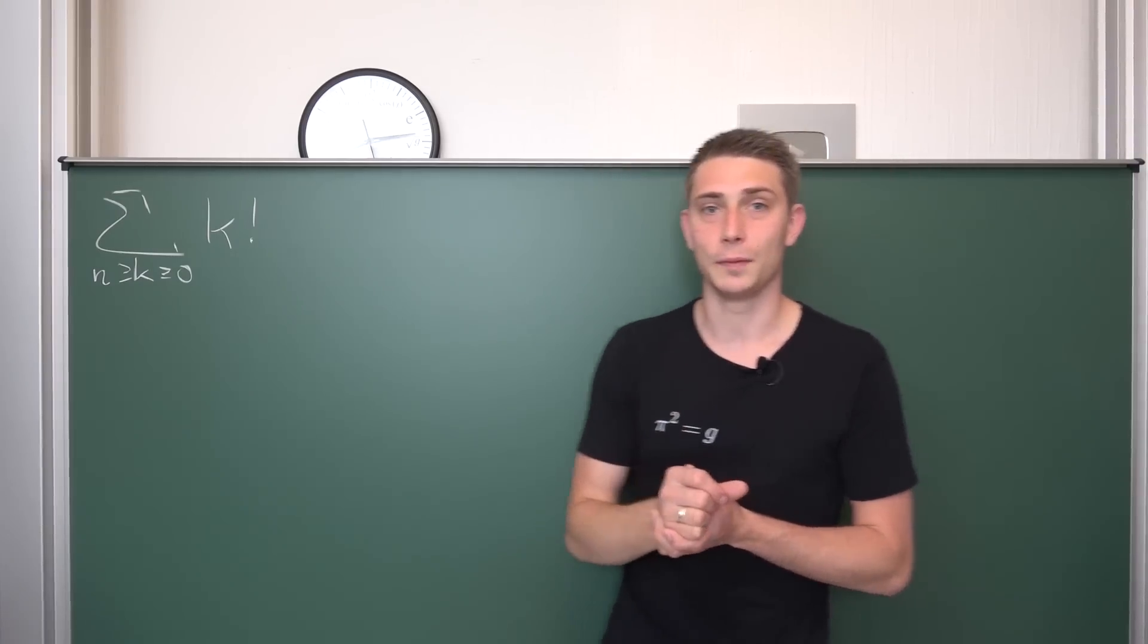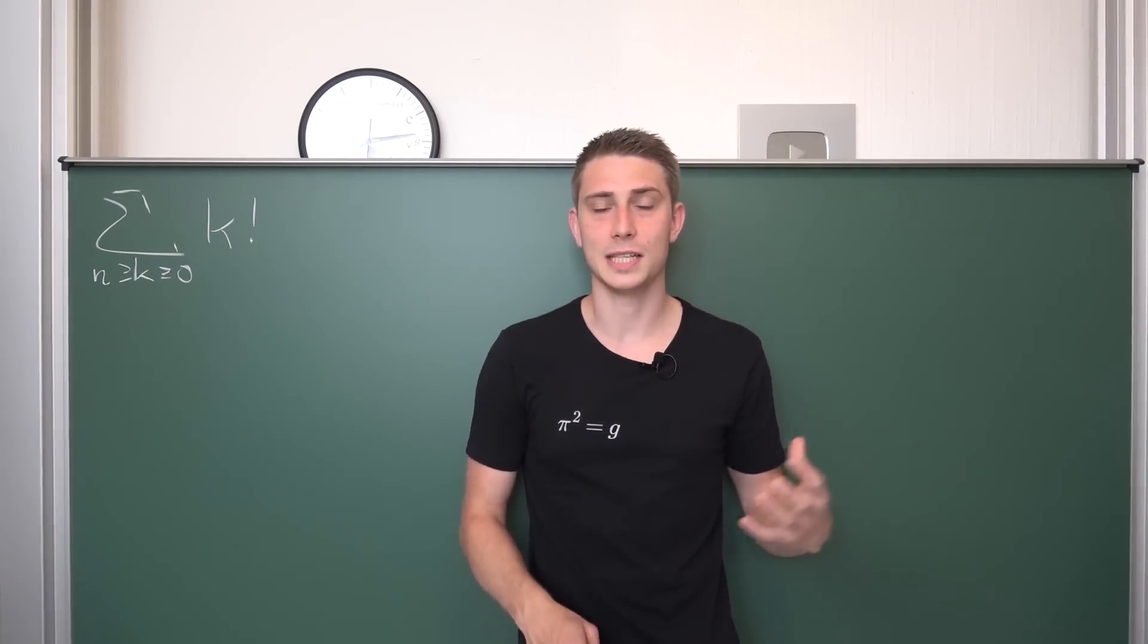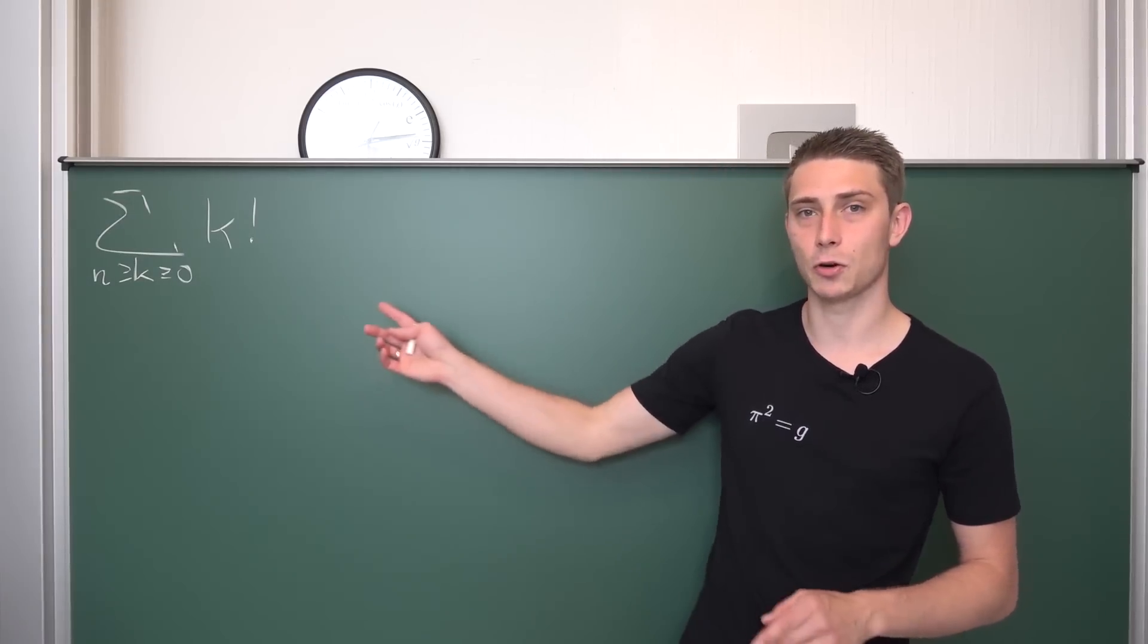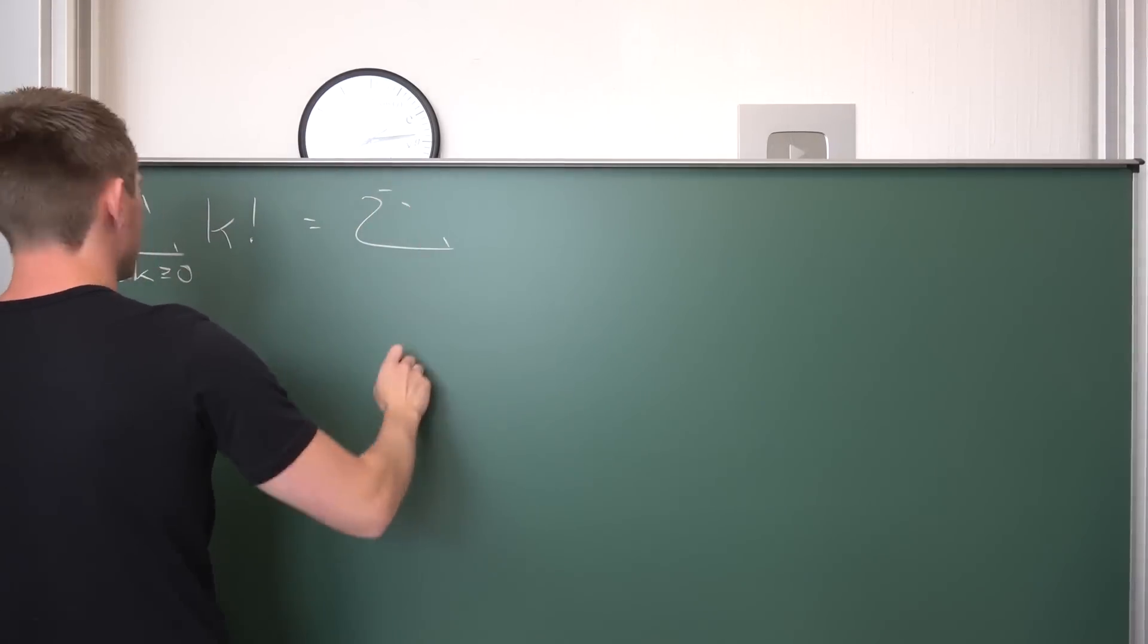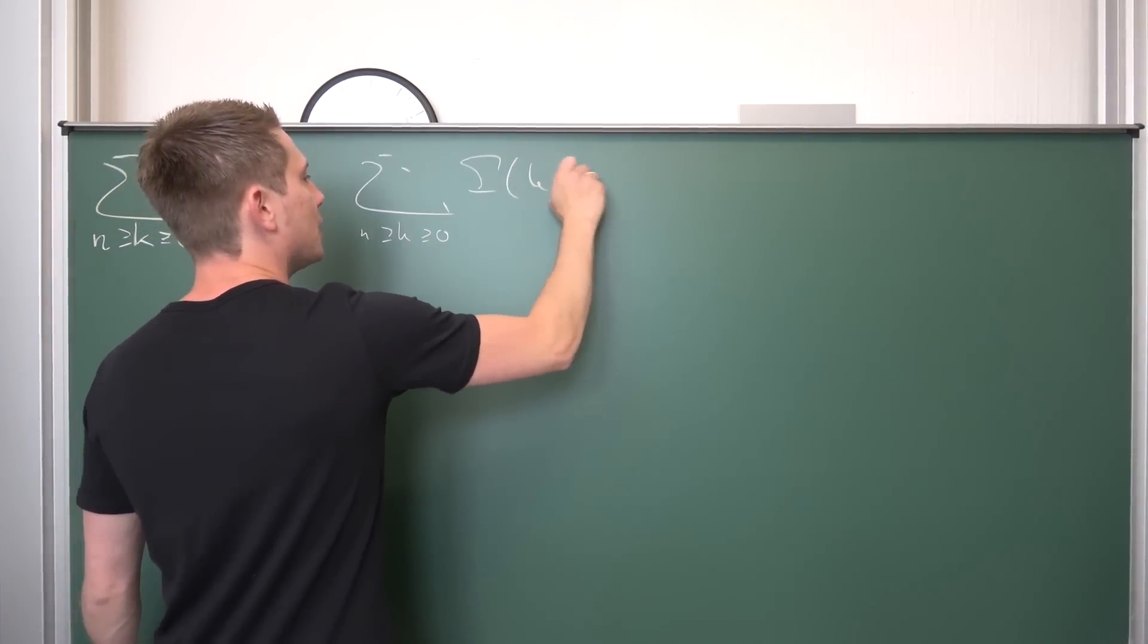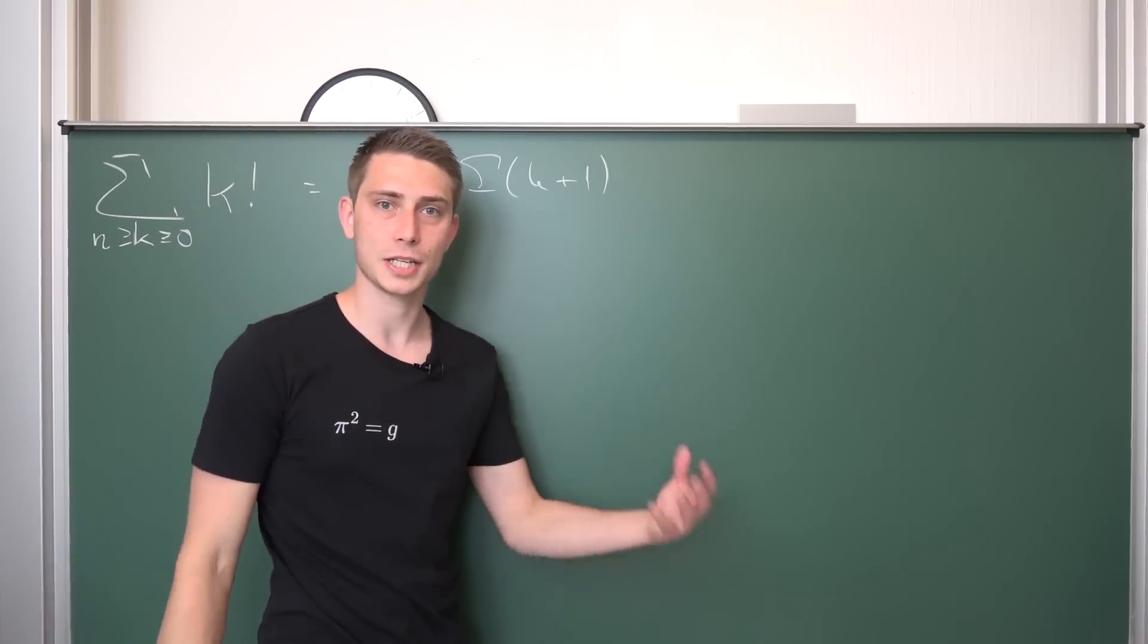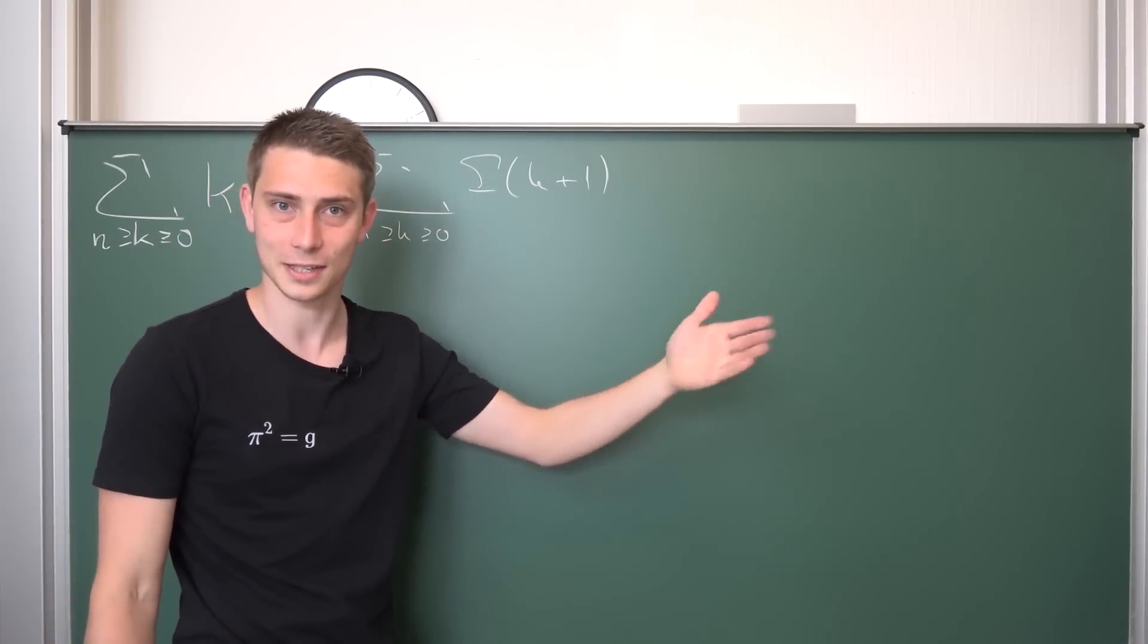So k factorial. We are going to extend this to an analytic continuation and there's actually something that we are really familiar with at this point. k factorial is nothing but the gamma function of k plus 1. We are going to rewrite it. So this right here is just a finite sum bounded between 0 and n of the gamma function of k plus 1.